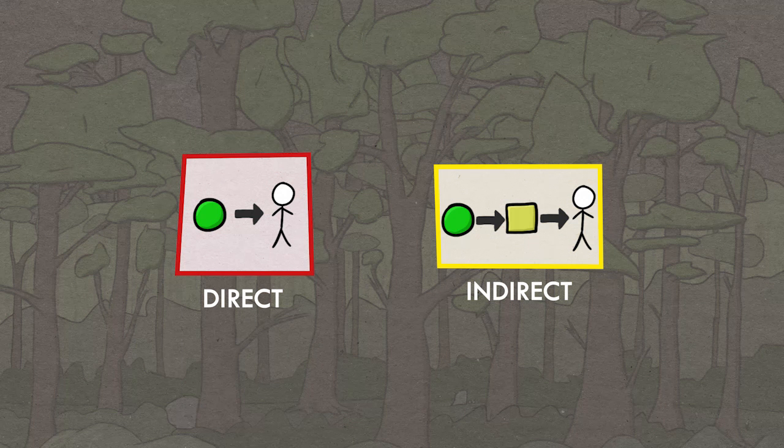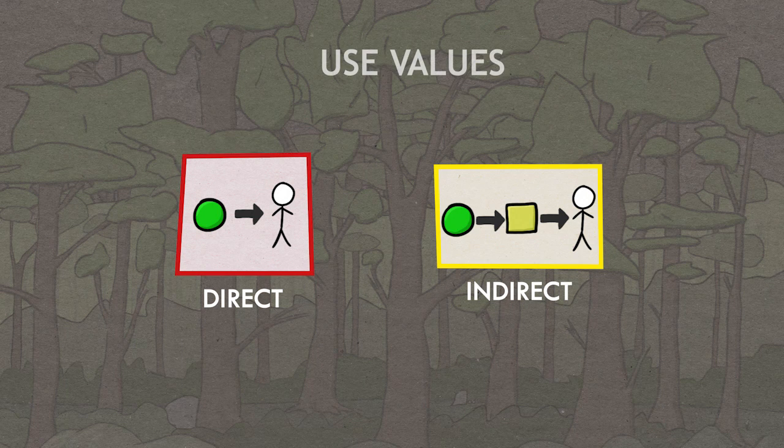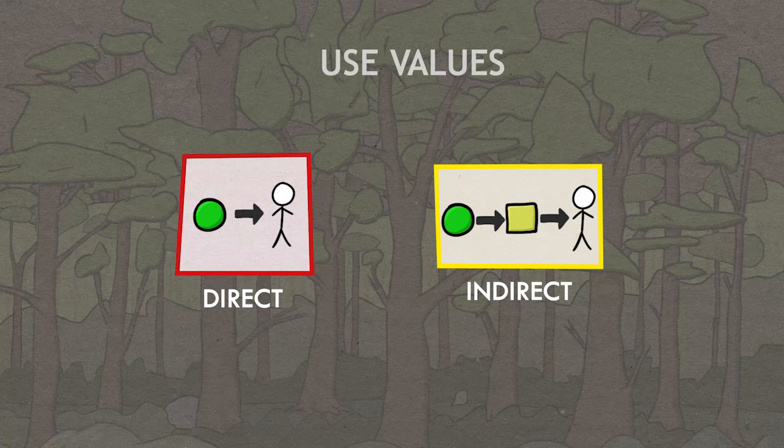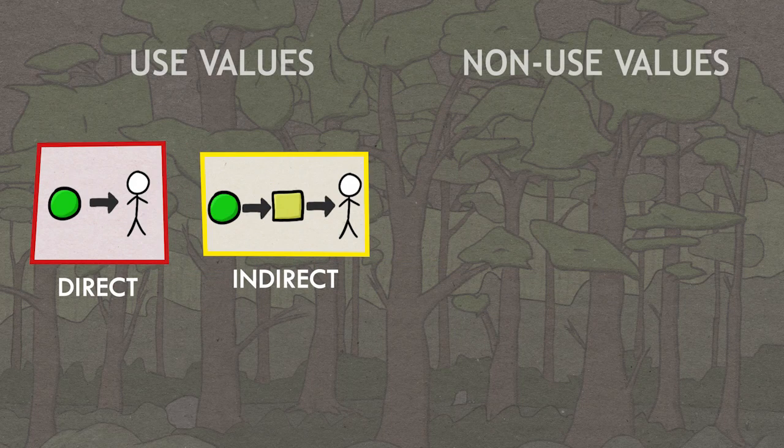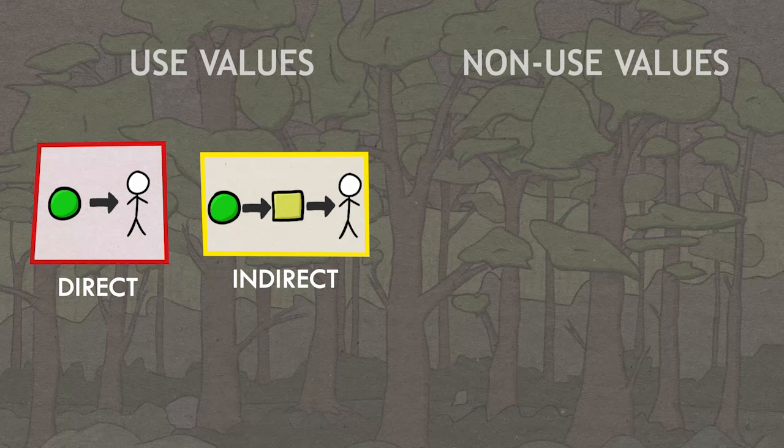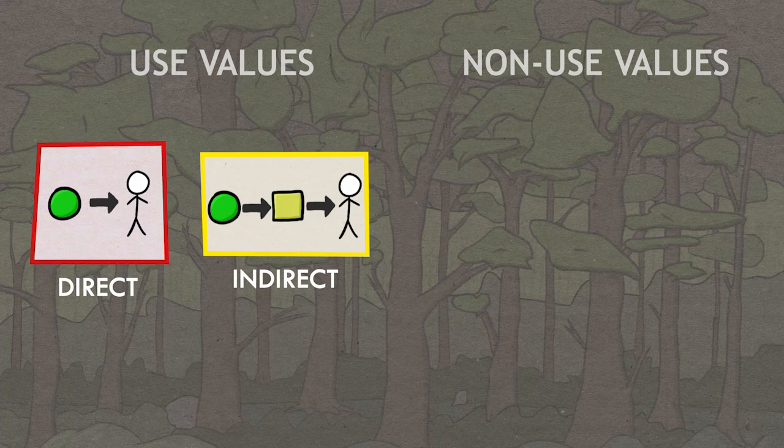So direct uses and indirect uses are use values, where the ecosystem is doing something for us physically, and our willingness to pay for them reflects that. But there are also non-use values, where people's willingness to pay comes from less tangible aspects of the ecosystem.